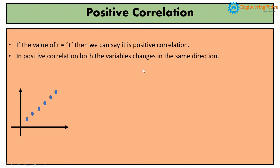We can understand this with the help of this graph. Here many samples are plotted over the graph and all the samples follow the same nature. For some samples the value of x is low and the value of y is also low. For others, the value of x is a little bit higher and the same case is also there with y. In general, if I increase the value of x, the value of y will also increase. Hence both variables x and y change in the same direction. This is one example of positive correlation.